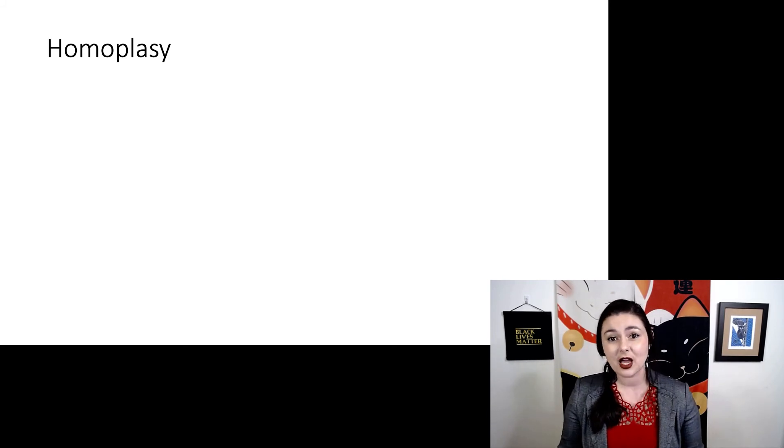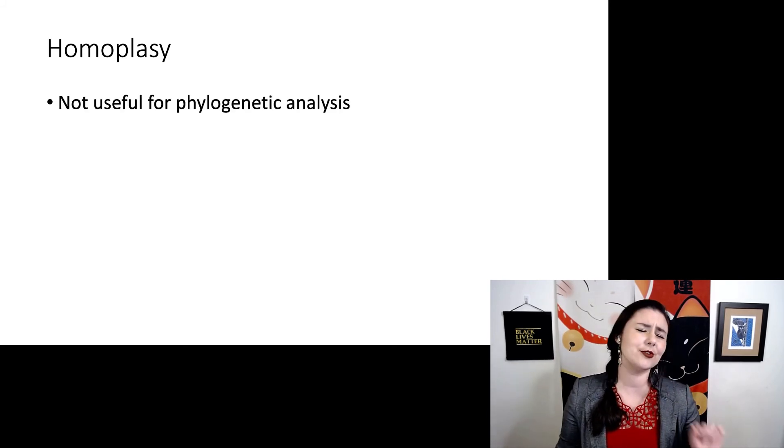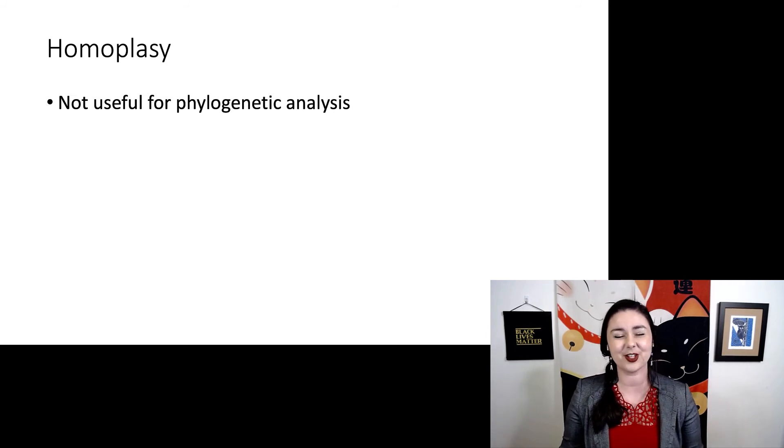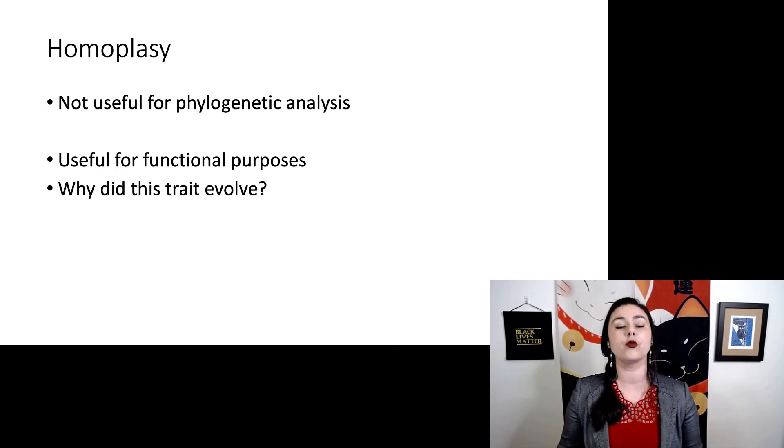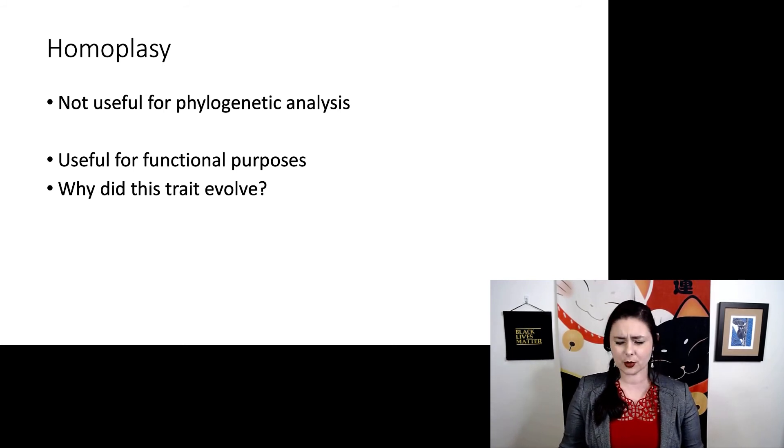Homoplastic traits can be super interesting, but they are not useful for phylogenetics at all. And they actually confuse our attempts to try and figure out how different species are related. So they are useful for functional purposes and asking the question, why did this trait evolve? You would then want to look for similarities in the environment between mammals and birds. And that would give you a clue as to why it is advantageous to be homeothermic.